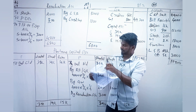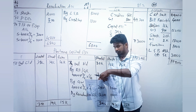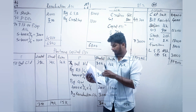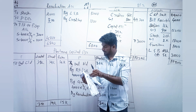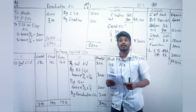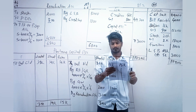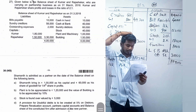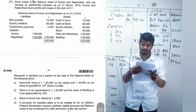Now we move to the second question from the 2019 question paper. We will just discuss the adjustments since you should have understood the overall process by now. Read the question on the board and let us start with the first adjustment.